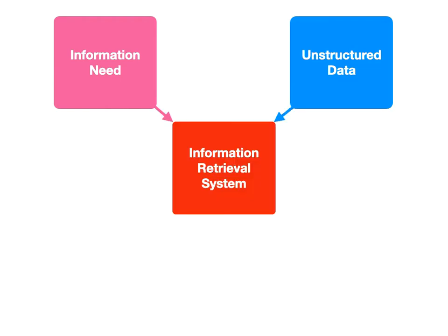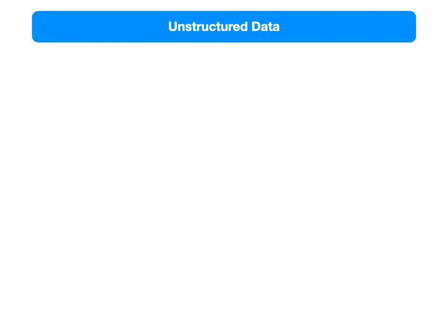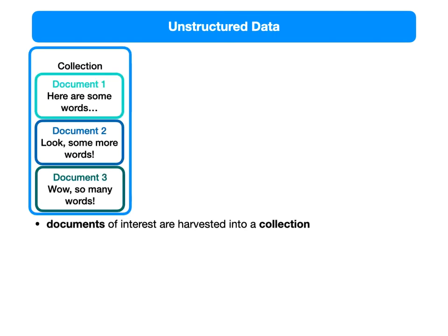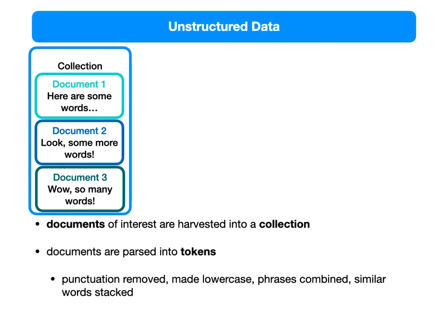Let's take a detour into walking through one of these systems. Remember the key structure: you are always taking two things, using a system to combine them, and getting one thing out the other side. Those two things are the information need and all of the unstructured data, feeding into the information retrieval system and out to the results page. Here's a very small collection — there are three documents in it. Document one: 'here are some words.' Document two: 'look, some more words.' Document three: 'wow, so many words.' Documents are harvested somehow into a collection.